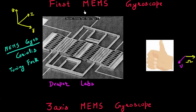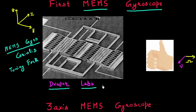In this video, I want to talk about two examples of these MEMS space gyroscopes. The very first example I have is this gyroscope which was developed by the Draper Laboratories in the early 1990s, I think it was 1993. This was the very first MEMS gyroscope, and it leveraged this tuning fork design. It consists of these two vibrating proof masses.